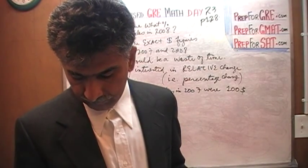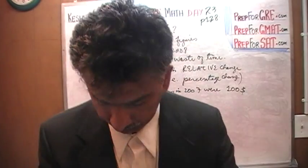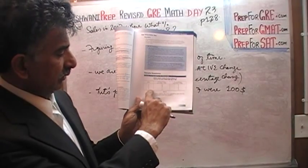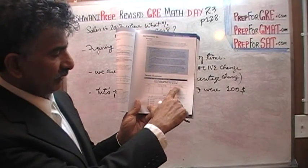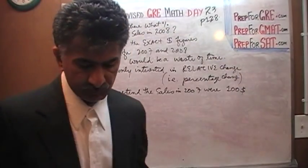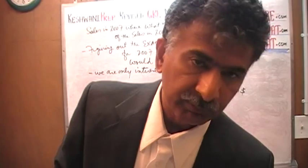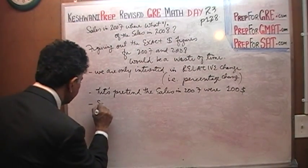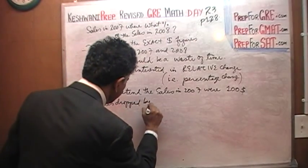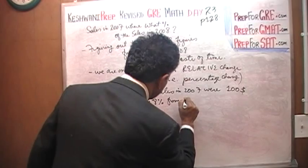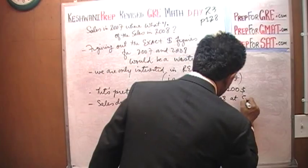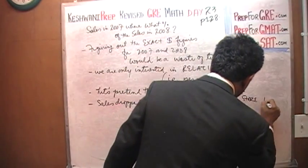On the bottom of page 127 there is a chart. Look at store T — at the very last row, in the column for percentage change from 2007 to 2008, it says negative 8, which means the sales dropped by 8% from 2007 to 2008 at store T.